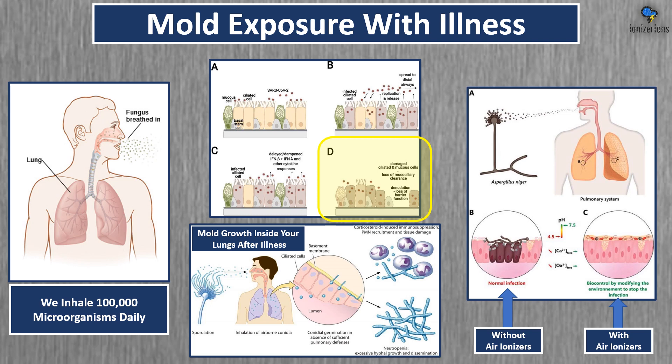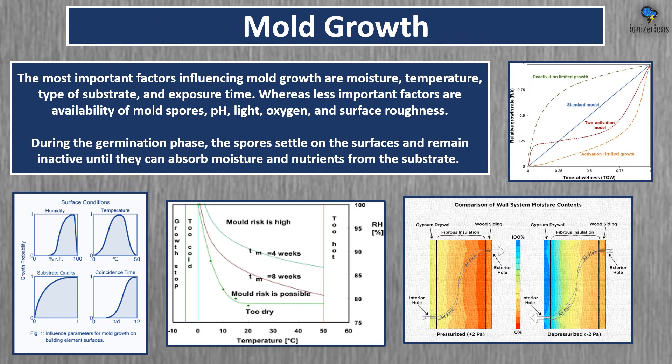Without air ionizers our infections could be much more severe; with air ionizers we could be much better off. The most important factors influencing mold growth are moisture, temperature, type of substrate, and exposure time. Less important factors include availability of mold spores, pH, light, oxygen, and surface roughness.